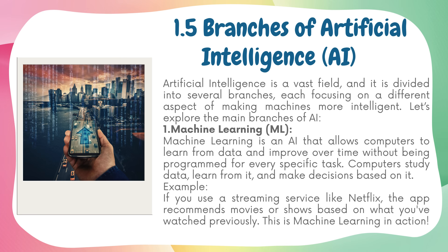Branches of Artificial Intelligence. AI is a vast field divided into several branches, each focusing on a different aspect of making machines more intelligent. Machine Learning, or ML, is an AI branch that allows computers to learn from data and improve over time without being programmed for every specific task. Computers study data, learn from it, and make decisions based on it. Example: if you use a streaming service like Netflix, the app recommends movies or shows based on what you've watched previously — this is machine learning in action.